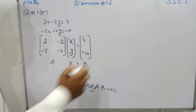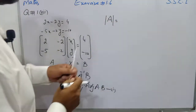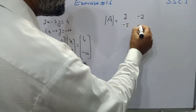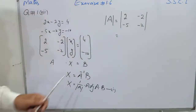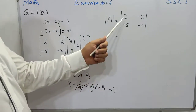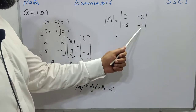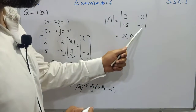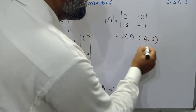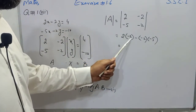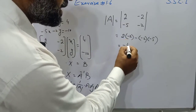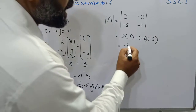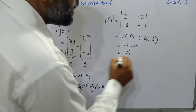First we find the determinant of matrix A. To find the determinant, we use straight lines around matrix A. When the determinant is found, we multiply the first entry and the last entry, and subtract the product of the second and third entries. So: two multiplied by minus two, minus the product of minus two and minus five. Two times minus two gives minus four; minus two times minus five gives plus ten, but with the outer minus sign gives minus ten. So the determinant value is minus fourteen.